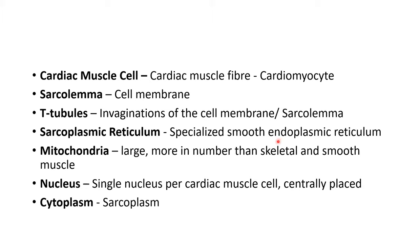The endoplasmic reticulum of the cardiac muscle cell — mainly the smooth endoplasmic reticulum — specializes to form the sarcoplasmic reticulum. The mitochondria of the cardiac muscle cell, when compared to the skeletal and smooth muscle, are larger in size and more in number. This is a good adaptation because mitochondria generate energy in the form of ATP, which is needed for muscle contraction. Since the heart constantly pumps blood, having more and larger mitochondria ensures enough energy for the heart's constant pumping action.